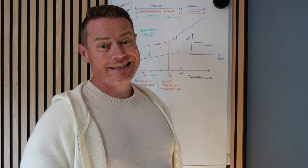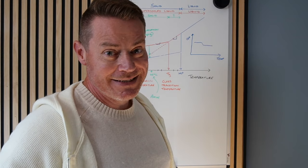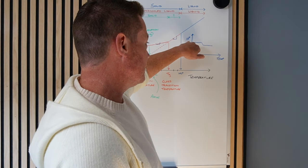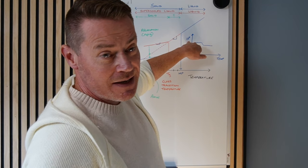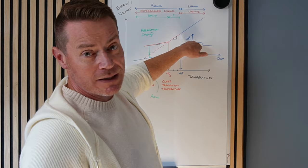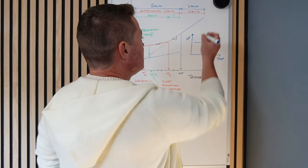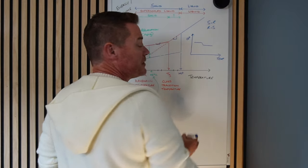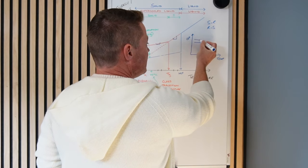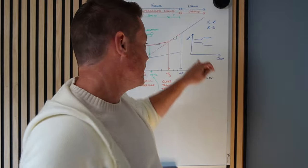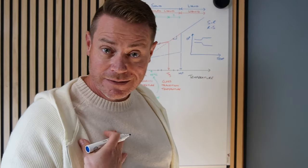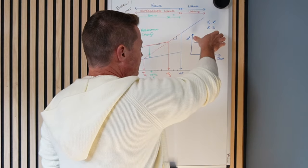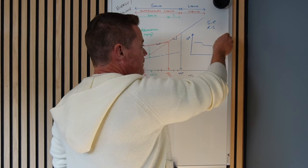One other point to note is that it does depend which DSC manufacturer you're using. Because the DSC plots the difference in power between sample and reference on the y-axis, you can plot sample minus reference or reference minus sample. So some DSCs show the glass transition step going one way, and others show it going the other way — but it's always a step change.